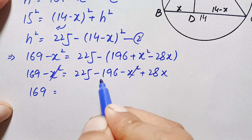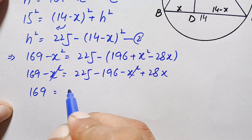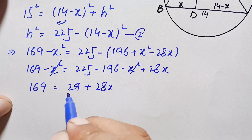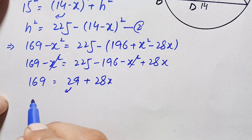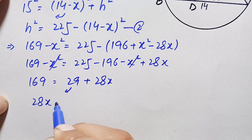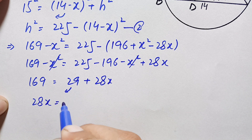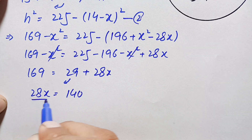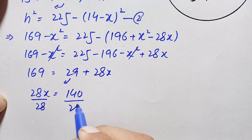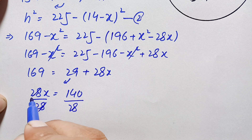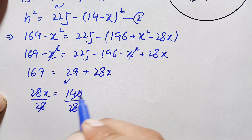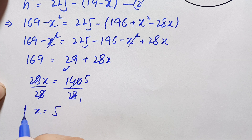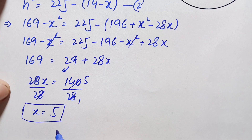225 minus 196 is 29, so we have 169 = 29 + 28x. Taking 29 to the left hand side: 28x = 169 − 29 = 140. Dividing both sides by 28, the value of x = 5.